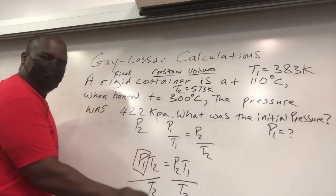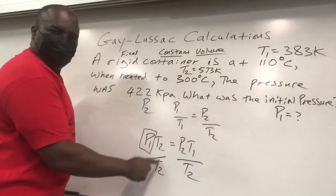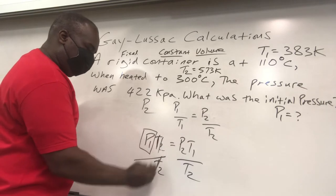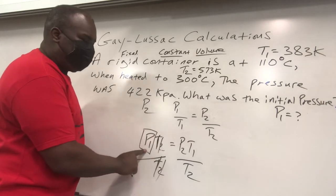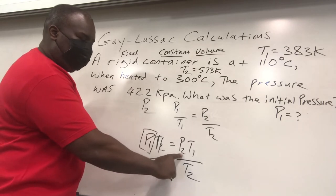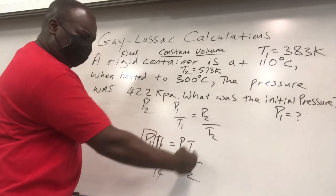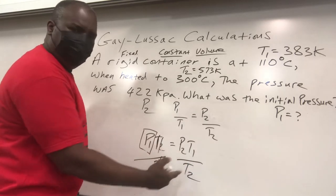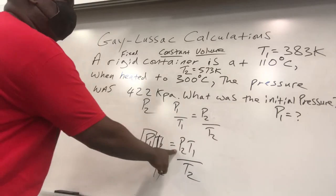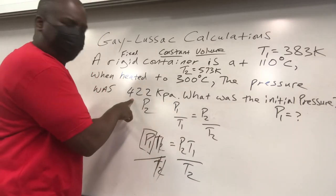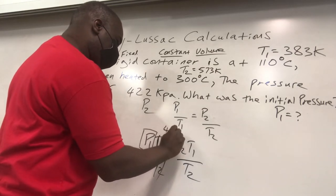Now what happens to these T2s? These T2s right here get cancelled out, bam and bam, they're gone. So now we have successfully isolated P1 by itself. P1 is going to be equal to P2 T1 over T2. Now we're going to carefully place the values for these variables in, we got our answer, we're good to go.